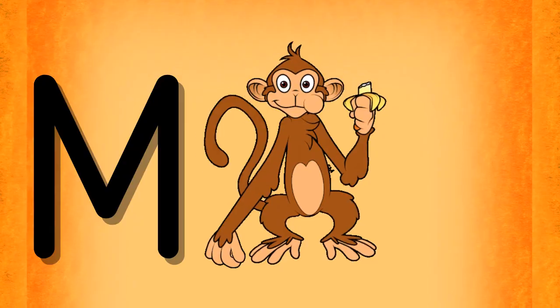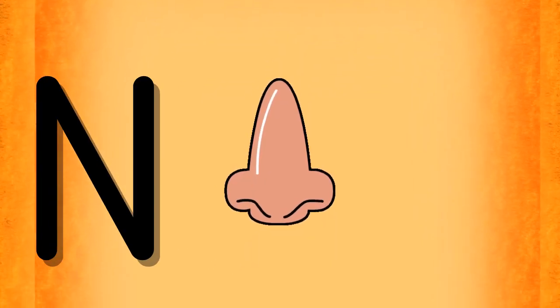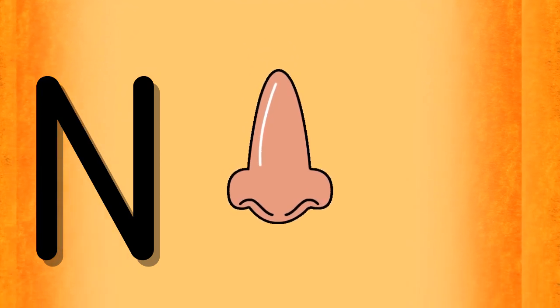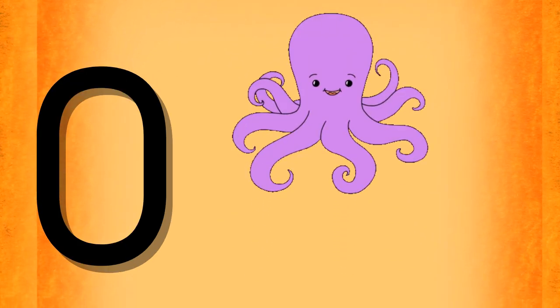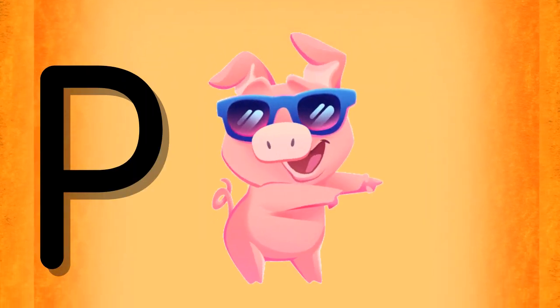M is for Monkey, M-Monkey. N is for Nose, N-N-Nose. O is for Octopus, O-O-Octopus. P is for Pig, P-P-Pig.